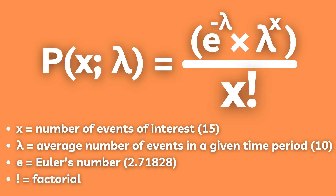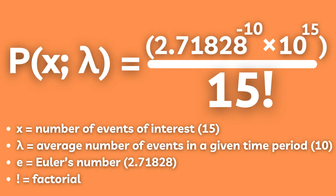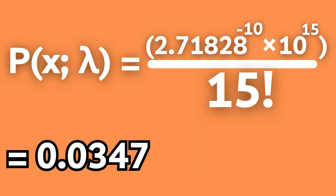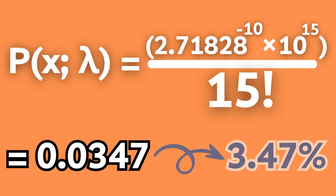Now if we plug in our numbers, we get 2.71828 — Euler's constant — to the power of minus 10, times 10 to the power of 15, divided by 15 factorial. This gives us 0.0347, or 3.47 percent.